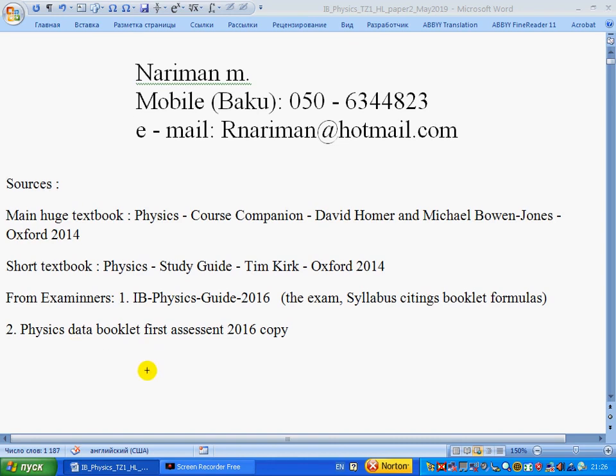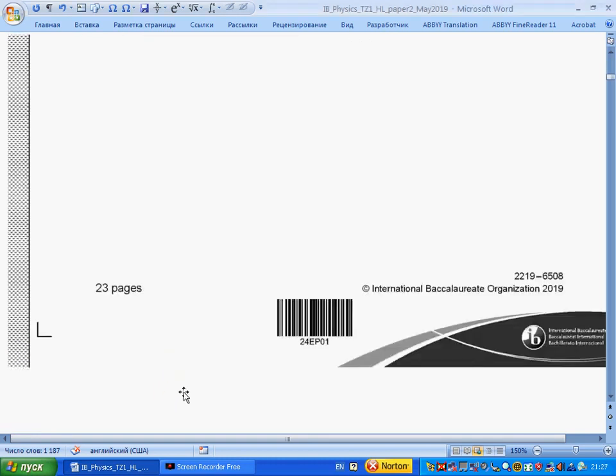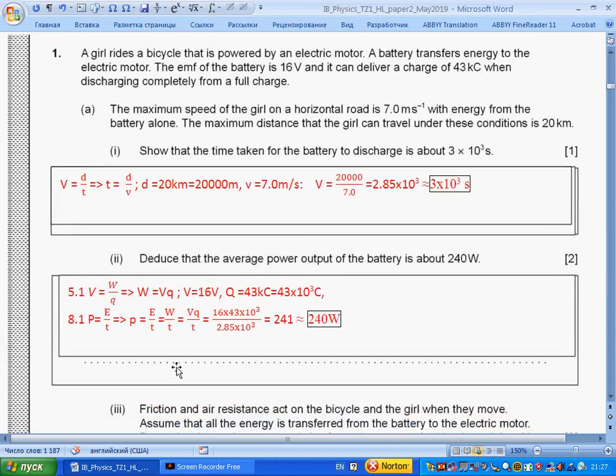This is the cover page. Question 1: A girl rides a bicycle that is powered by an electric motor. The battery transfers energy to the electric motor. The emf of the battery is 16 volts and it can deliver a charge of 43 kilocoulombs when discharging completely from a full charge. Part a: The maximum speed of the girl on a horizontal road is 7 meters per second with energy from the battery alone.